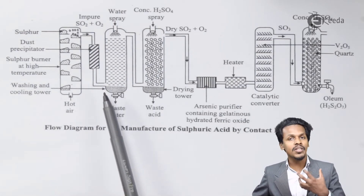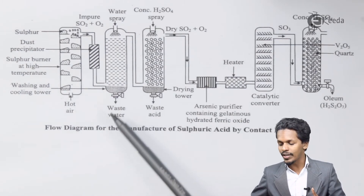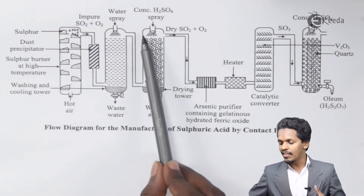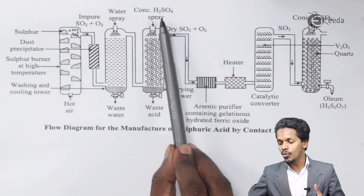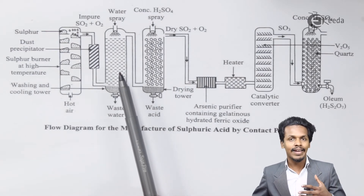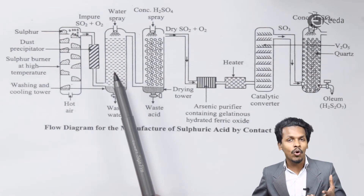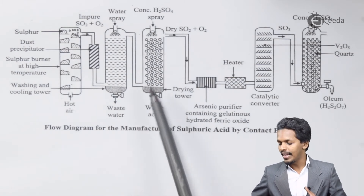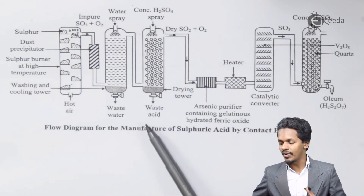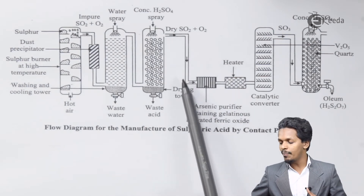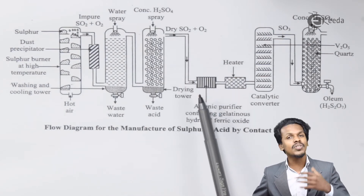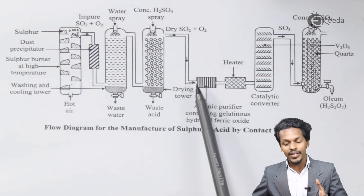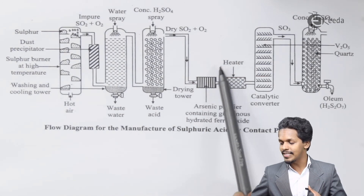Pure SO₂ gas passes through the dust precipitator. Water is sprayed to remove impurities, and wastewater is eliminated. The gas then passes through a chamber where H₂SO₄ is sprayed — since H₂SO₄ is a dehydrating agent, it removes all moisture. Dry SO₂ along with O₂ then moves through a pipe, with waste acid removed. The SO₂ and O₂ then pass through an arsenic purifier, which stops any remaining dust particles or impurities, followed by a heater.